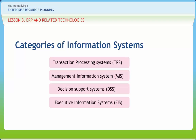An executive information system is a computer-based system intended to facilitate and support the information and decision-making needs of senior executives by providing easy access to both internal and external information relevant to meeting the strategic goals of the business. Expert systems are man-machine systems with specialized problem-solving expertise. The expertise consists of knowledge about a particular domain, understanding of problems within that domain, and skills at solving some of these problems. Today's expert systems deal with domains of narrow specialization.